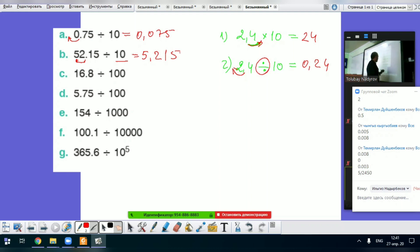If there are two zeros, so decimal point moves two places to the left side. So it's equal to 0.168, understand?